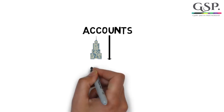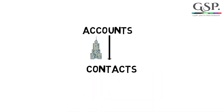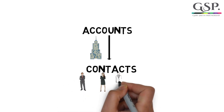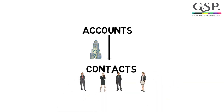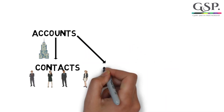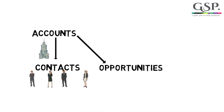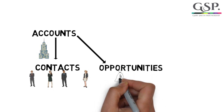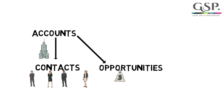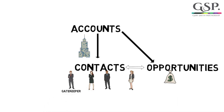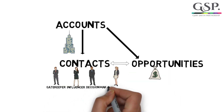Accounts have contacts. Contacts are people that work at those accounts. Accounts also have opportunities. Opportunities are sales deals. One account might have one, none or many opportunities over time. And of course, we can record the relationship between contacts and specific opportunities.